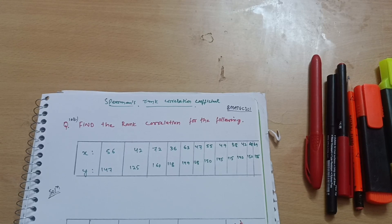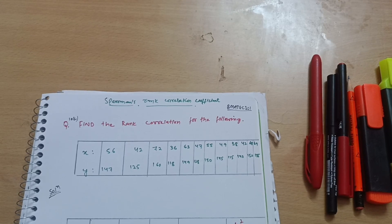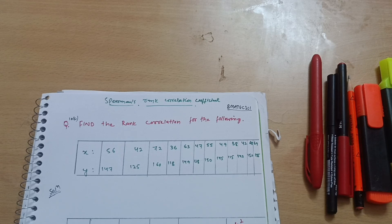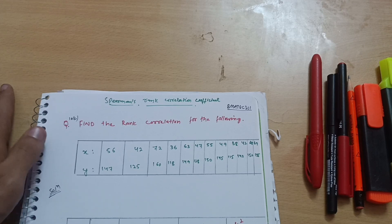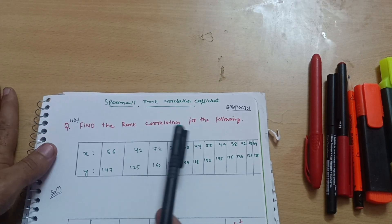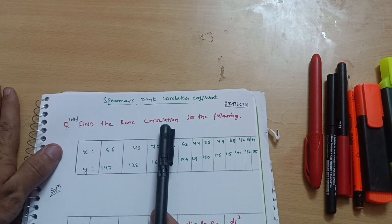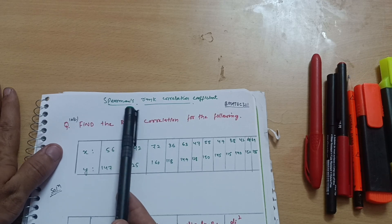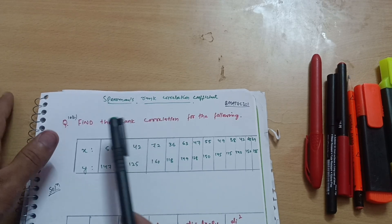Hello everyone and welcome back to my channel. We were discussing the model question papers of mathematics for the EC branch students. I have already solved a variety of problems on the model question papers — I've provided the link in the description box. Today I will solve another question on rank correlation, also called Spearman's rank correlation coefficient.